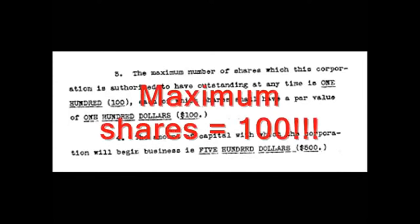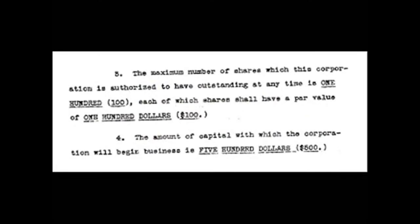Number 3: The maximum number of shares which this corporation is authorized to have outstanding at any one time is 100, each of which shares shall have a par value of $100. Number 4: The amount of capital with which the corporation will begin business is $500. Number 5: The corporation is to have perpetual existence. Number 6: The principal office of the corporation shall be located in the Centennial Building, Tallahassee, Leon County. Number 7: The number of directors shall be three. Number 8: The names of the directors who shall hold office for the first year are: Harry O'Coghlan, 150 Broadway, New York, New York; Samuel B. Howard, 150 Broadway, New York, New York; Arthur W. Britton, 150 Broadway, New York, New York.